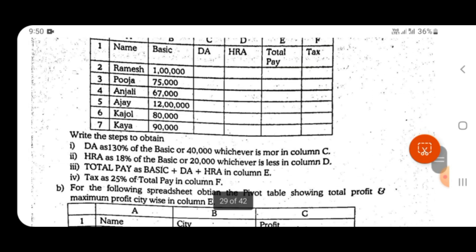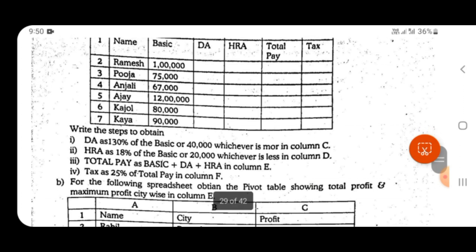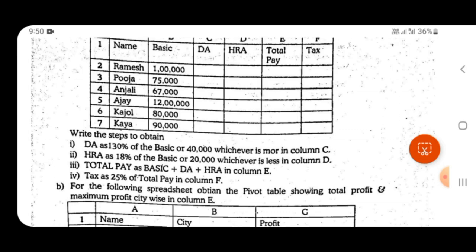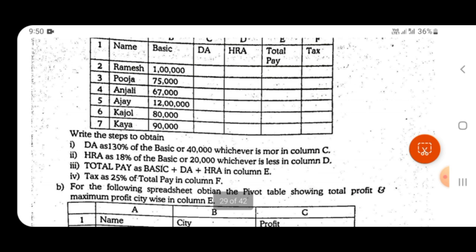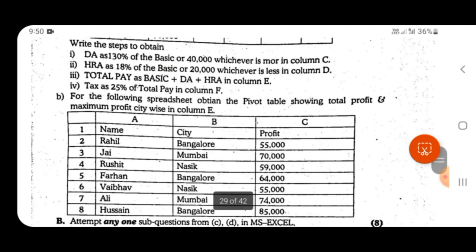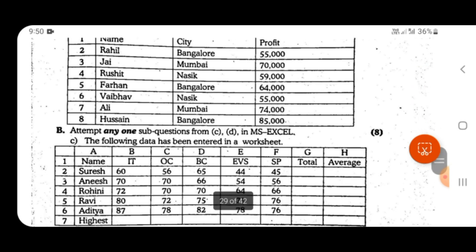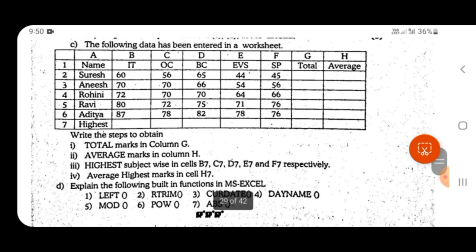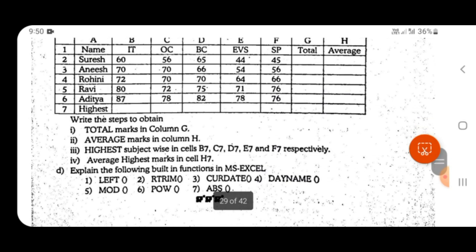It is simple and you can easily attempt it. For example, one question asks to calculate 130% of the basic salary or 14,000, whichever is more, in column C. To find which value is greater, you use the MAX formula. So when you encounter questions involving 'whichever is more' or sub-totalling scenarios, the MAX function is typically used. Such Excel questions are generally straightforward and not overly complicated.